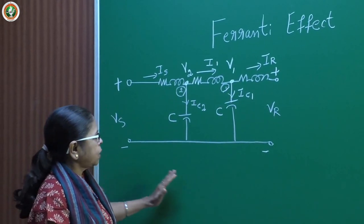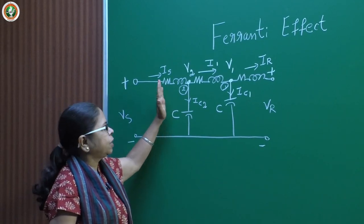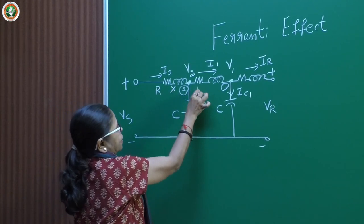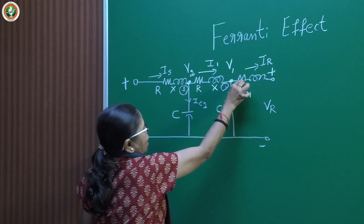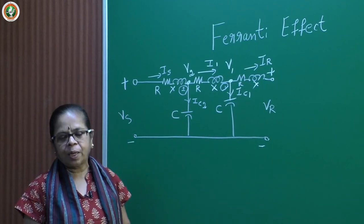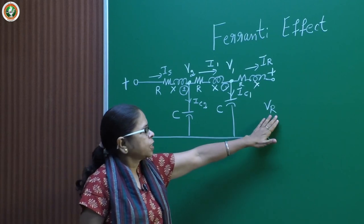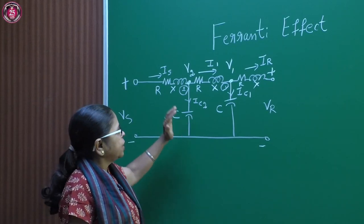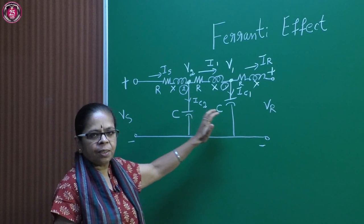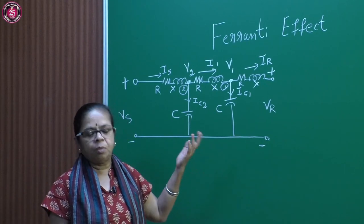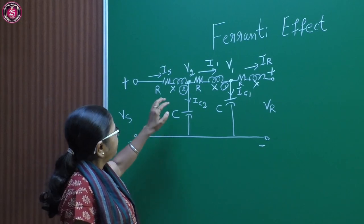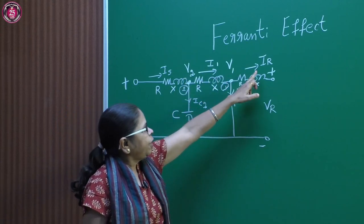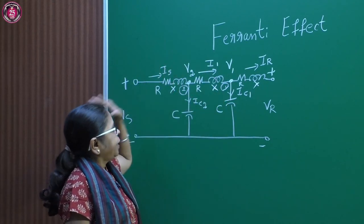Let us be very clear about this circuit. This is a circuit representation of a line with three sections. I have R and X, R and X, R and X — all equal sections. Receiving end voltage is Vr; I have modeled the capacitance of the line. Since I have taken equal sections, the capacitance is Cc. This lumping is only an approximation as it is a distributed parameter. We have Rx as the impedance in each section, and two nodes: V1, V2, IR, I1, IS.